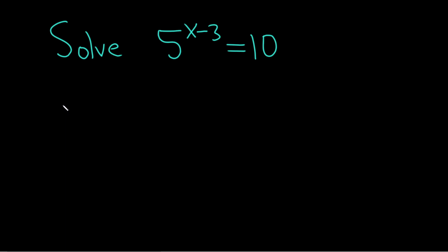Solve 5 to the x minus 3 equals 10. So the x is up here in the exponent, and we somehow need to bring it down.